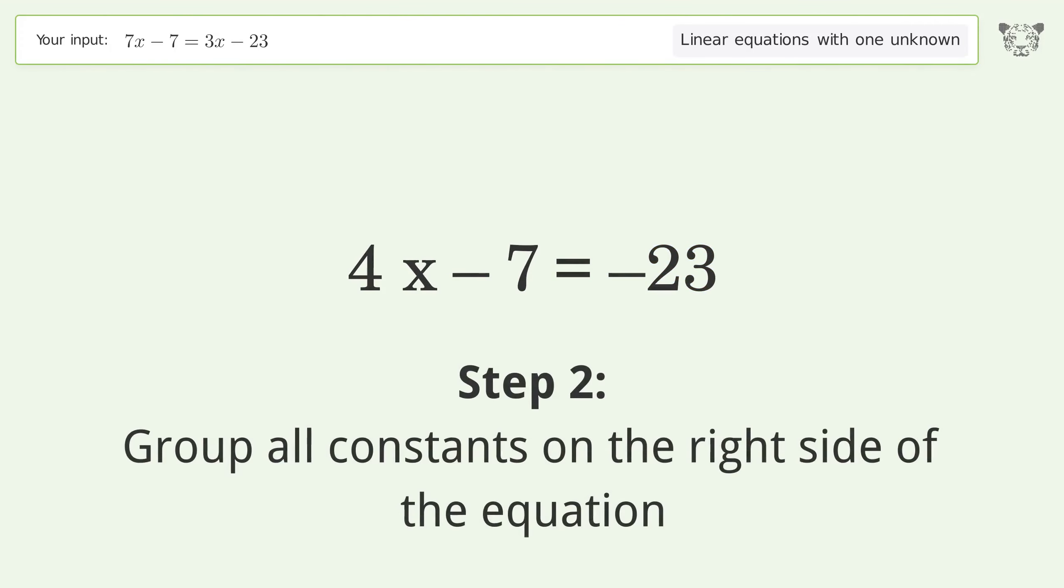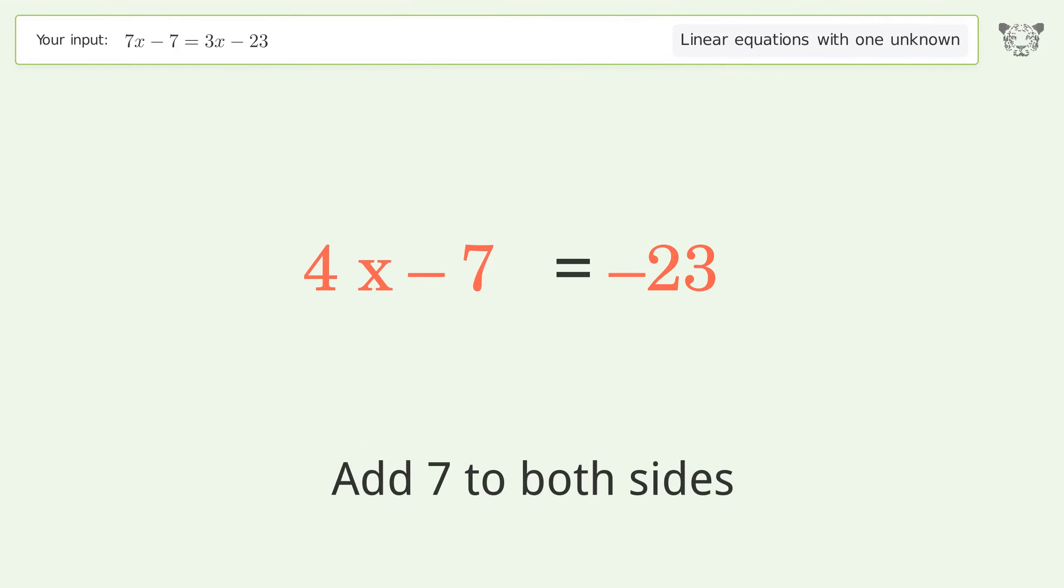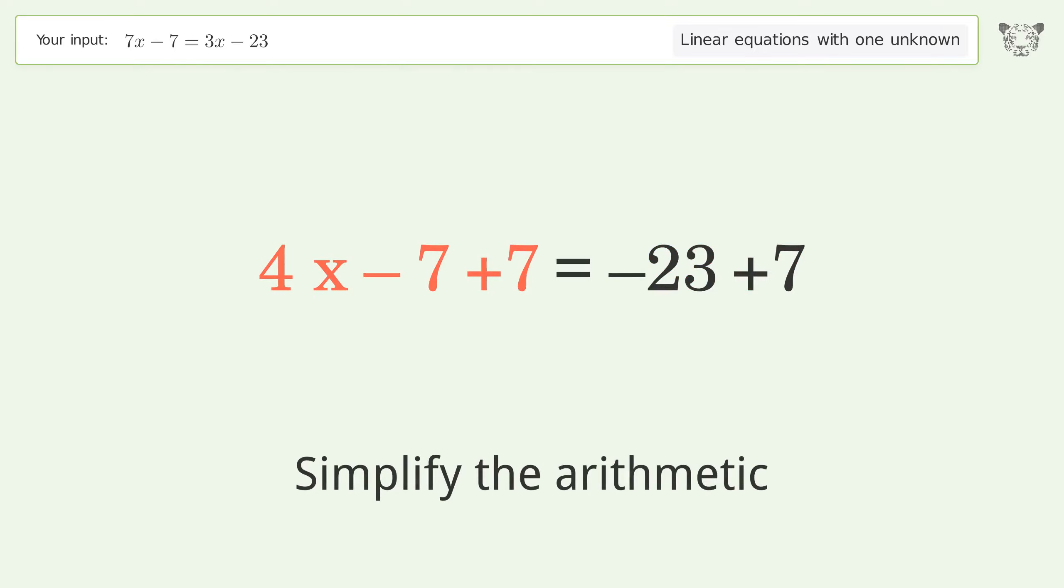Group all constants on the right side of the equation. Add 7 to both sides. Simplify the arithmetic.